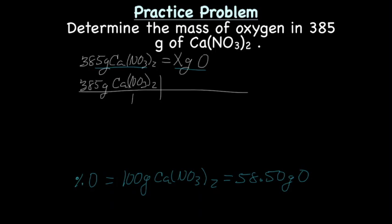Who goes on the bottom? We have grams, but we have grams here and here as well. So, what else can we use to identify which one goes at the bottom? How about the molecule? We have that molecule, so we'll put 100 grams Ca(NO3)2 at the bottom and 58.50 grams of O on the top.